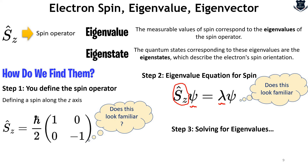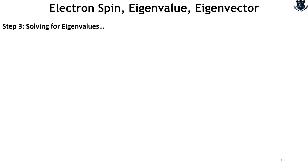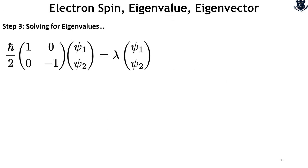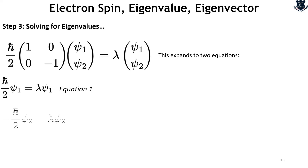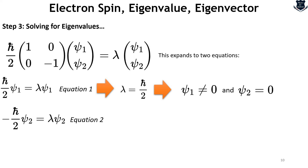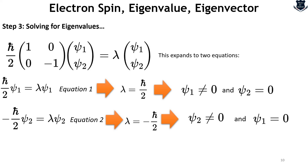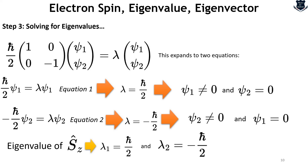Now that we know the eigenvalue equation, we solve it to find the eigenvalues of lambda corresponding to the eigenstate — remember every eigenvalue should correspond to an eigenstate. To solve the equation we set up the matrix equation, which will result in two equations: equation one and equation two, which already shows a negative sign. From equation one we find lambda equals ℏ/2, given that psi_1 is not equal to zero and psi_2 equals zero. From equation two we find lambda equals -ℏ/2.